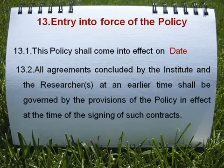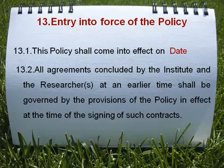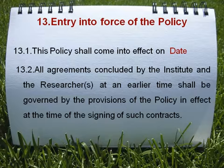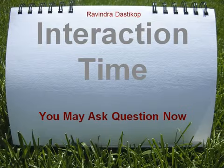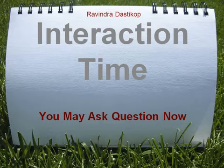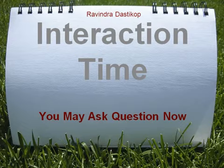Once everything is agreed and every department agrees to the provisions of the IPR policy, and every sponsoring party is ready, the policy will come into effect. For example, the policy shall come into effect on a specific date. If the governing council agrees to the provisions submitted, it will come into effect from that date — for example, 5th June.